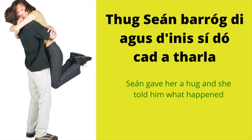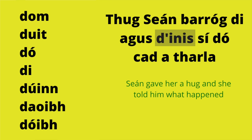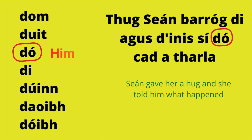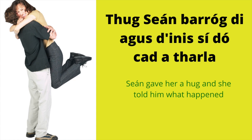'Thug Seán barróg di agus d'inis sí dó cad a tharla.' Seán gave a hug to her, and she told him what happened. 'Thug' is the past tense of 'tabhair' — it means 'gave'. 'Barróg' is a hug, and 'di' is the preposition for 'her'. 'D'inis sí dó' — she told him. 'D'inis' is the past tense of 'inis'. 'Dó' is the preposition for 'him'. 'Cad a tharla' means 'what happened'.